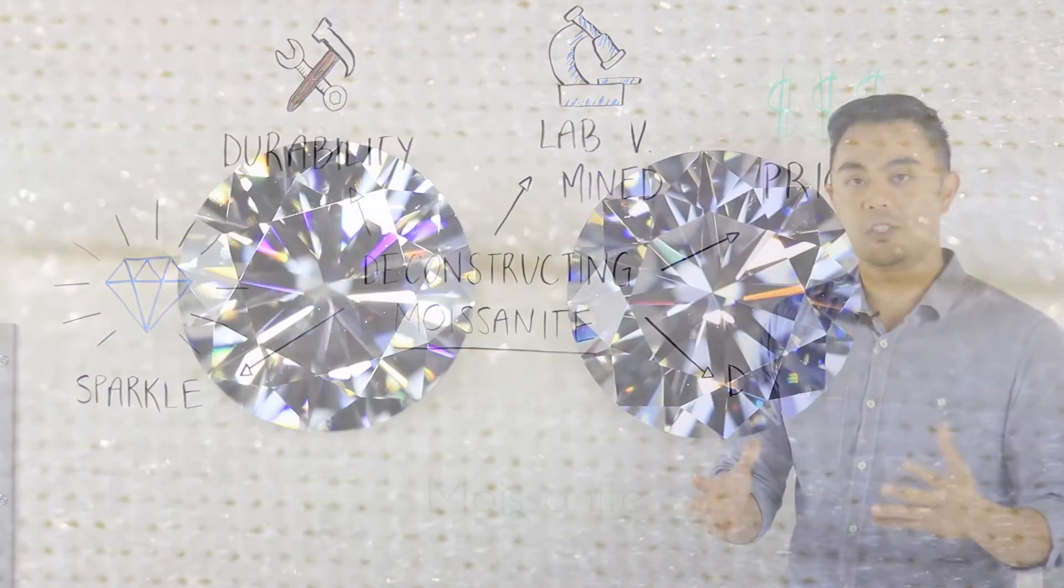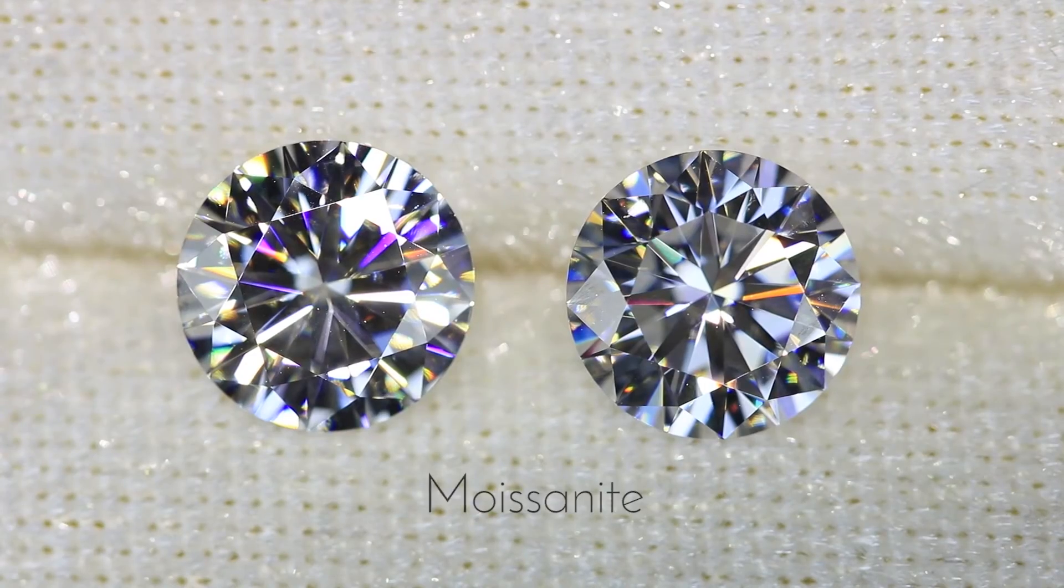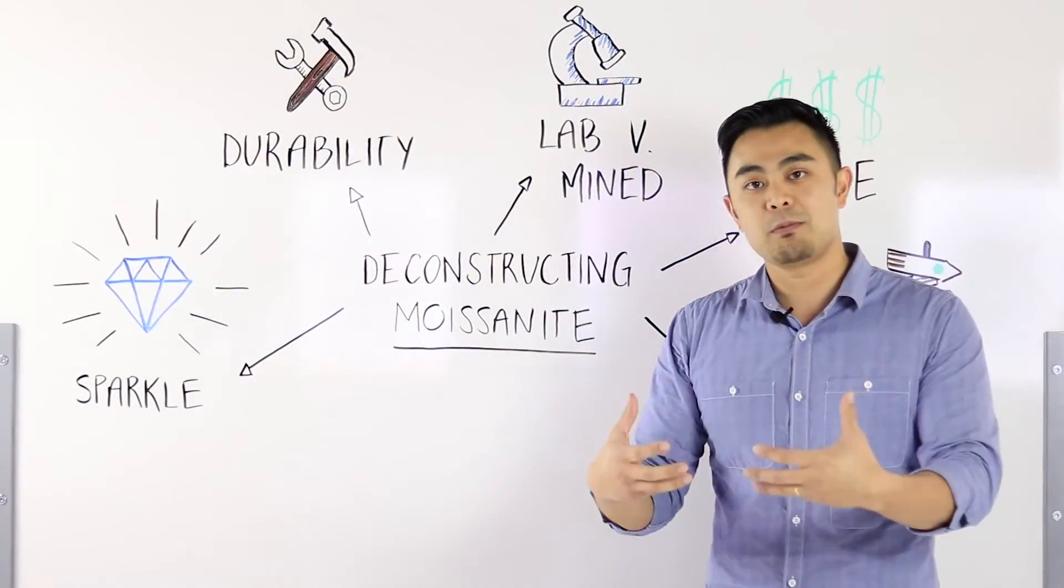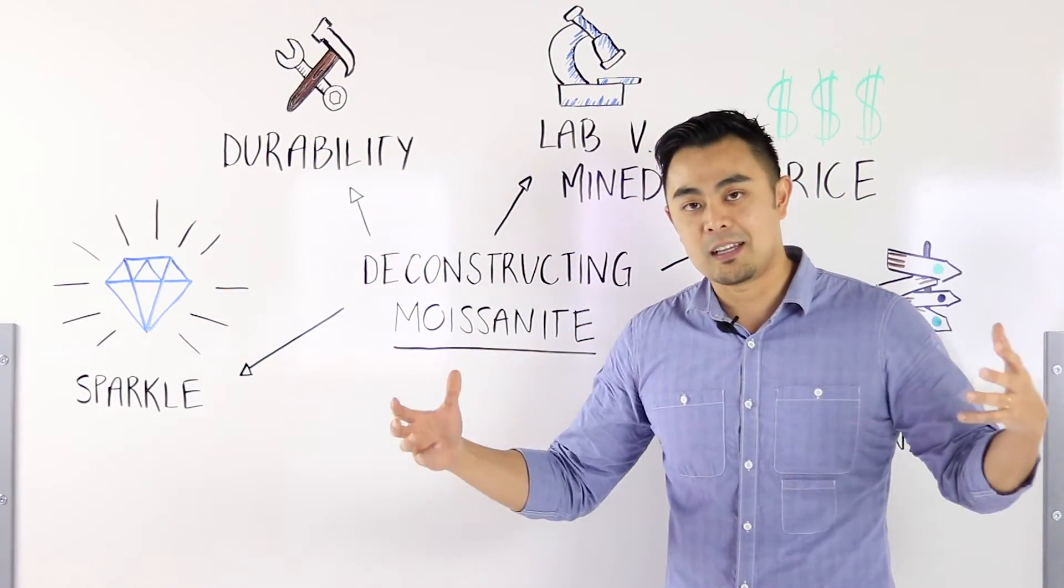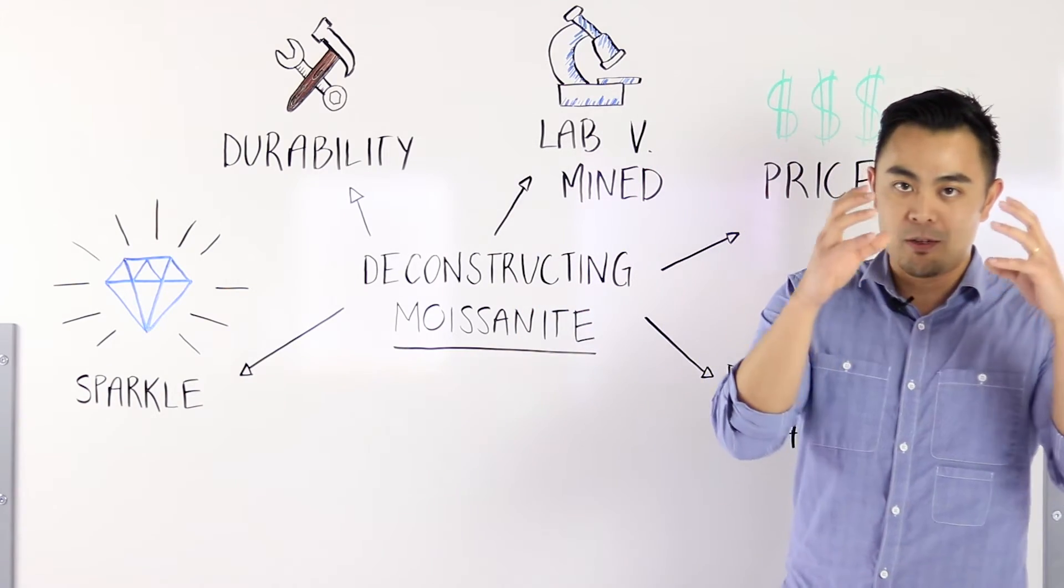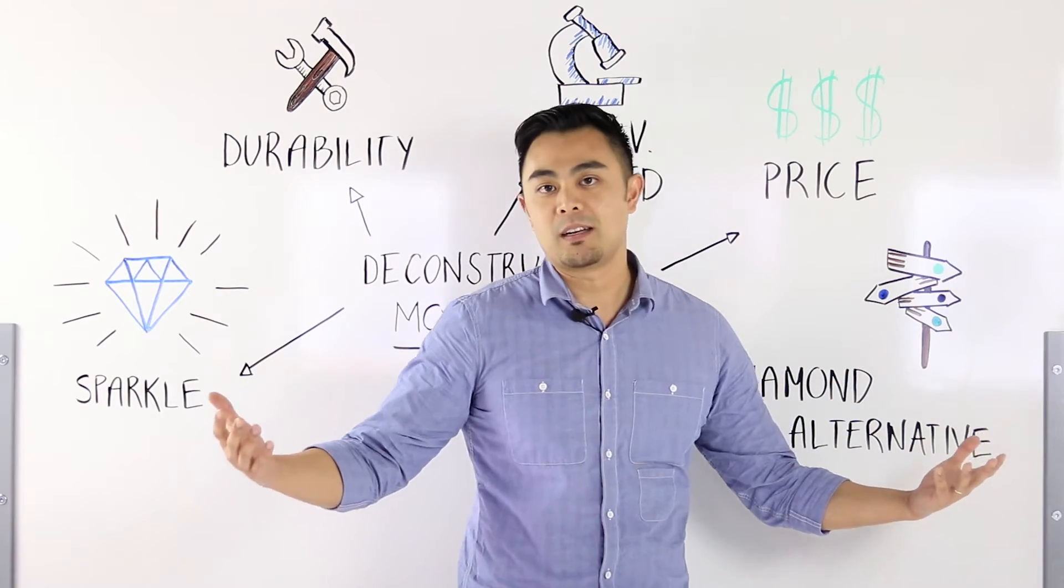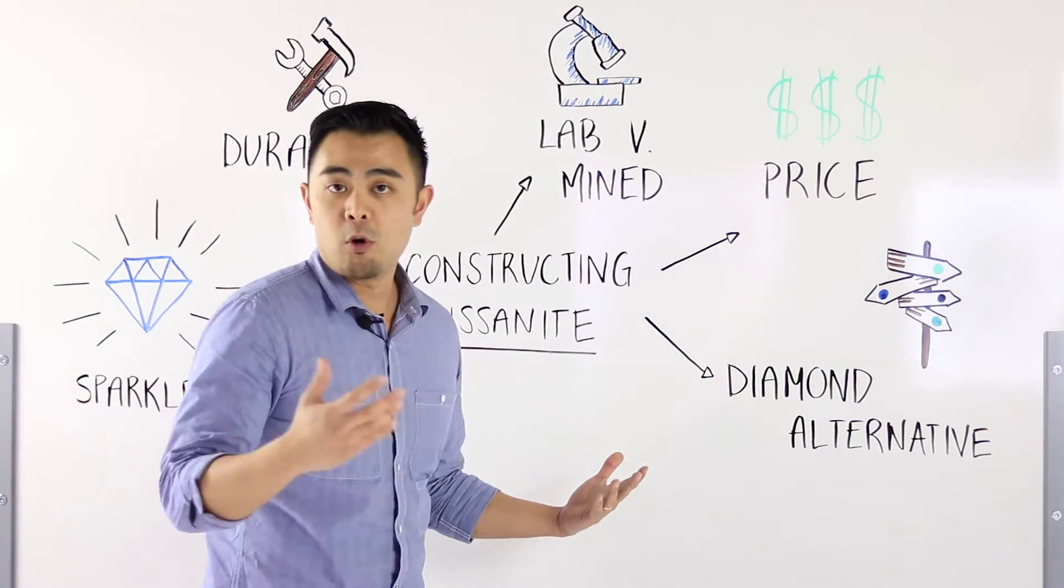When it comes to a lab-created gem, all that means is a gem can actually be created in a lab nowadays, grown with the same chemical compound, and at the same time be exactly the same when it comes to breaking down the actual gem. The only difference is that it's made in a lab.